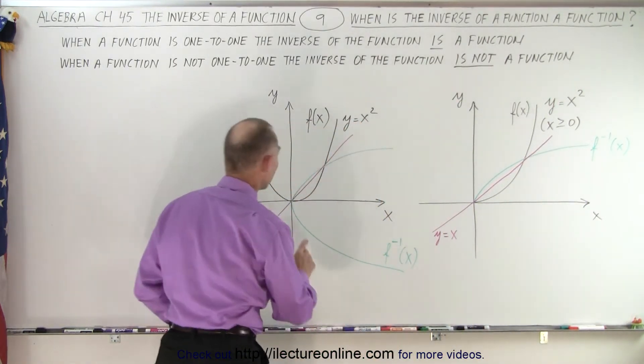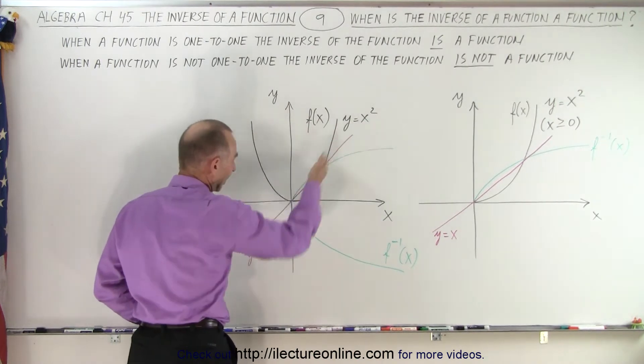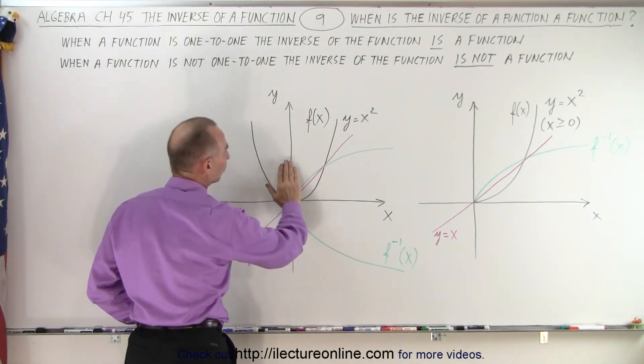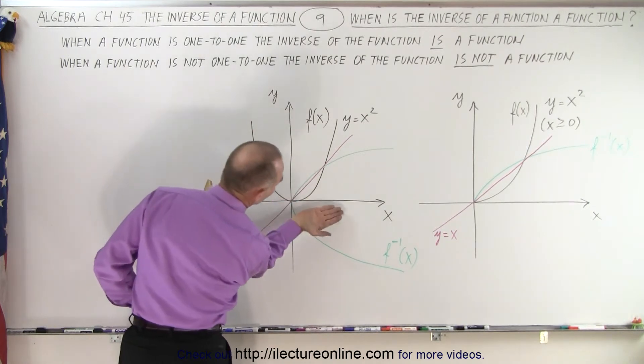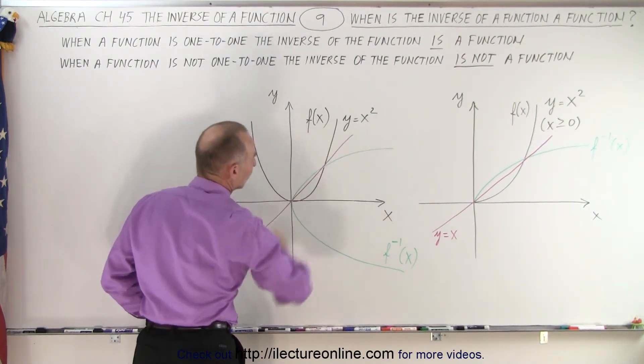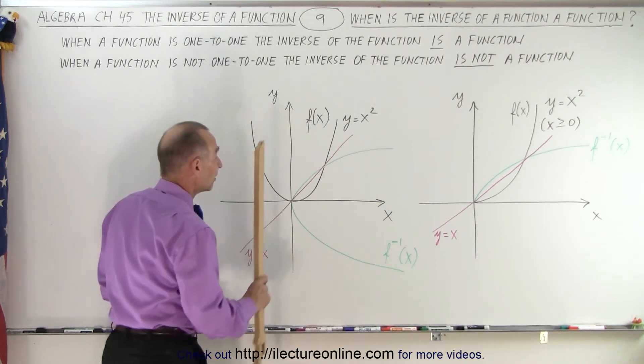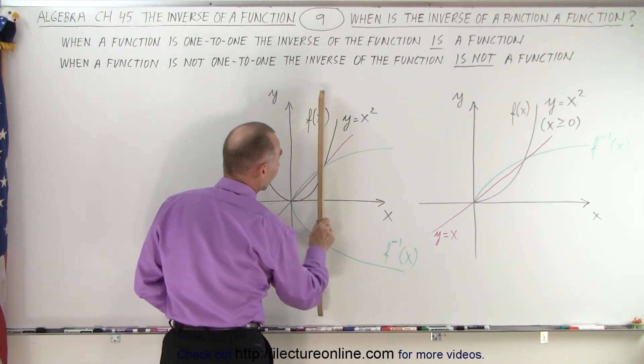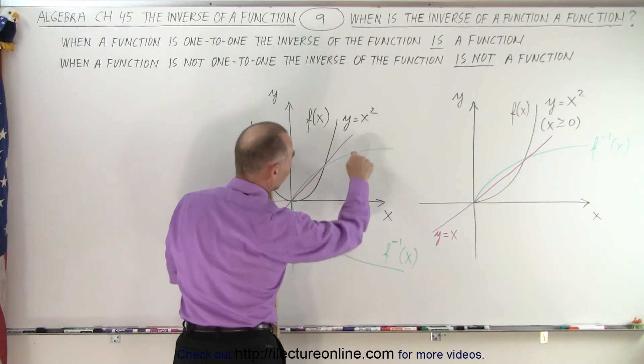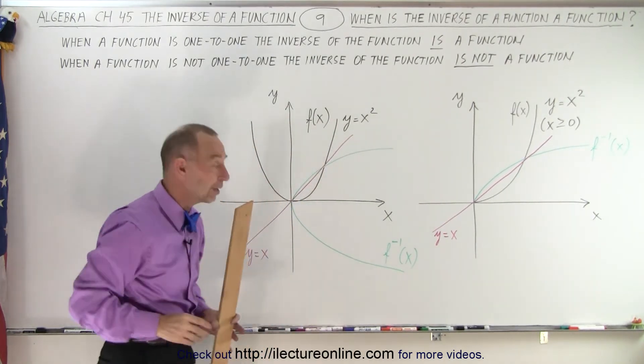But over here, you can see again we have the 45-degree line, the y equals x line. We take the black curve, the parabola, and we do the mirror image across the 45-degree line. And you can see that if I now do a vertical line test, the vertical line crosses the green curve twice.